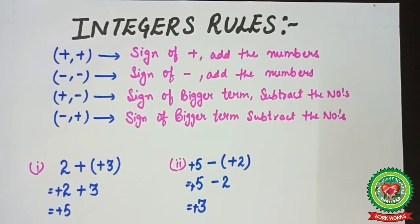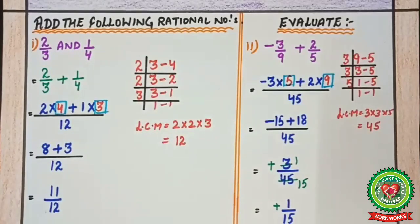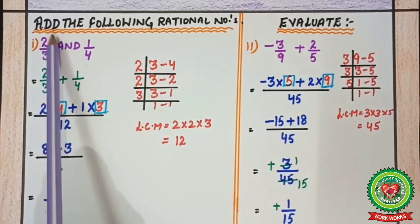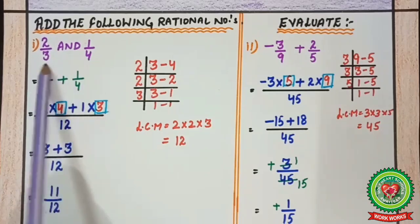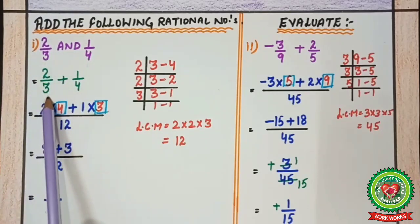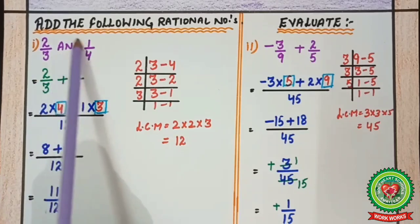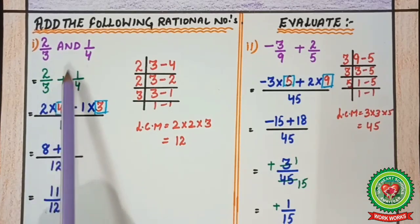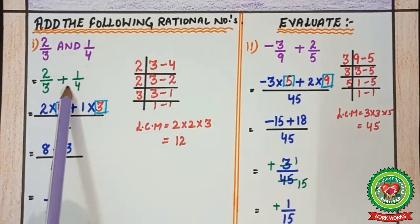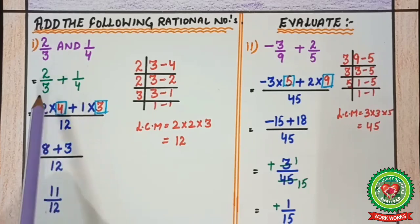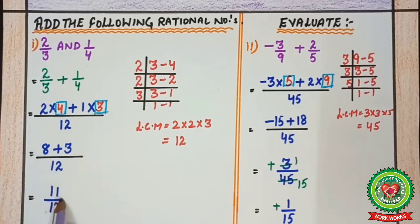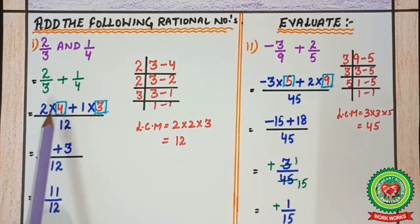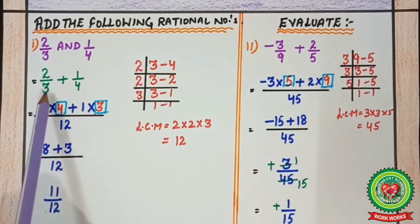Let's start with the first example: add the following rational numbers — 2/3 and 1/4. We write 2/3 + 1/4. Now we take the LCM of the denominators 3 and 4. On the 2-times table, 3 doesn't come; on the 3-times table, 3 ones are 3. The LCM is 2 × 2 = 4, and 4 × 3 = 12.